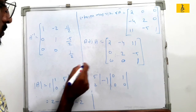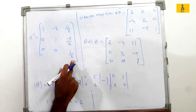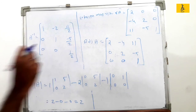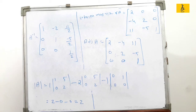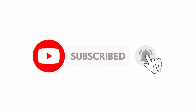This is A inverse — the final result from the calculation. The process is: find the cofactor matrix, take its transpose to get the adjoint, then divide by the determinant. In conclusion, next we are going to discuss the solution of a system of linear equations using matrices.